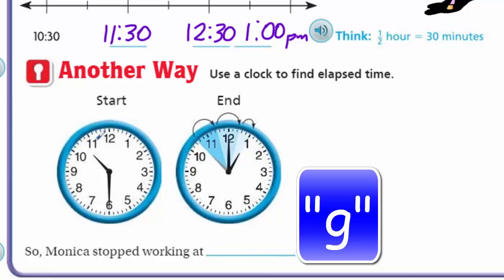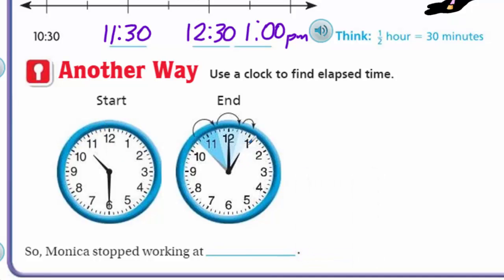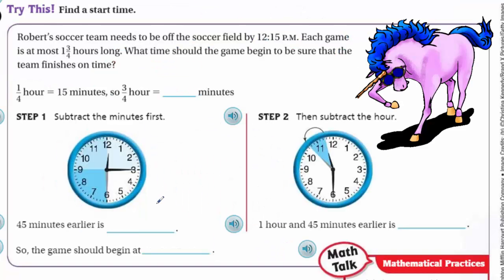The visual clock helps because you can see 10:30, 11:30, 12:30, 1:00 - you can see the time pass. So Monica stops working at 1 PM. It's kind of the same thing we just did above - one with a number line, the other with an actual clock. Now, try this: find a start time.